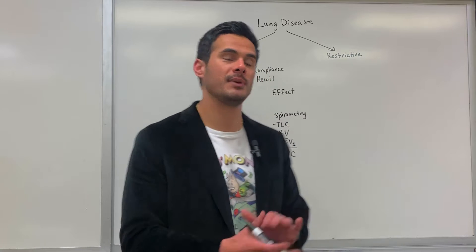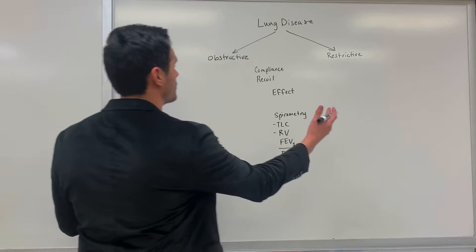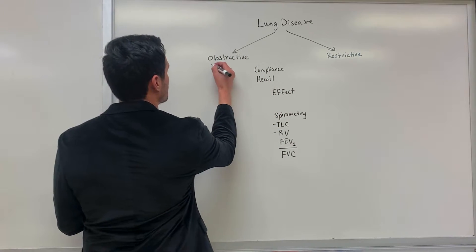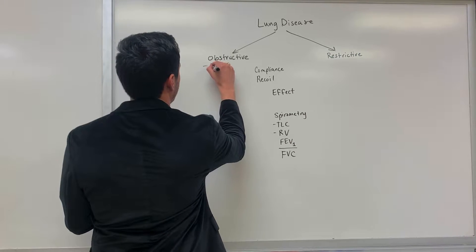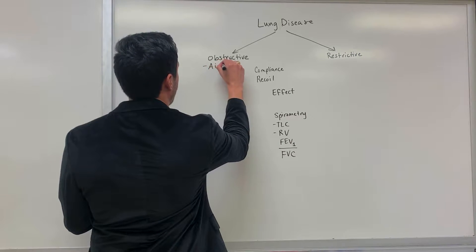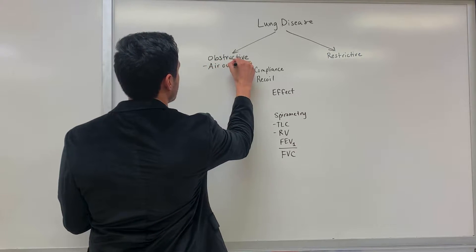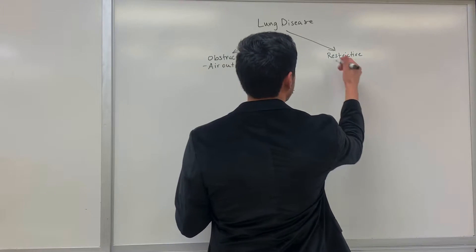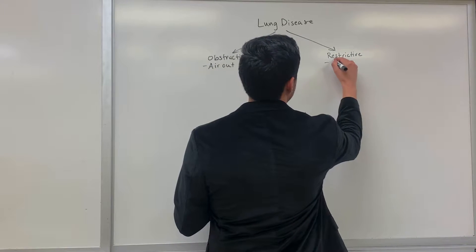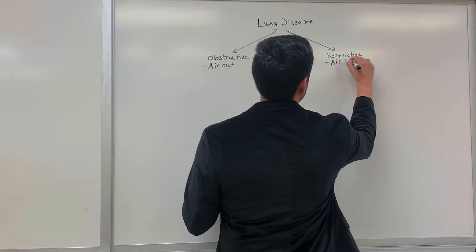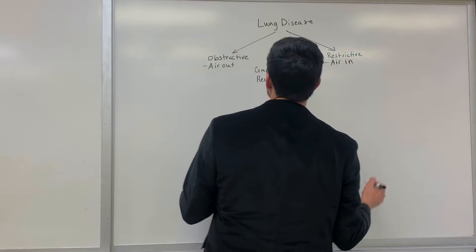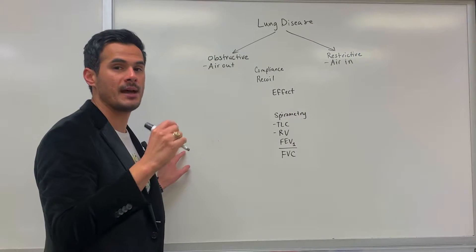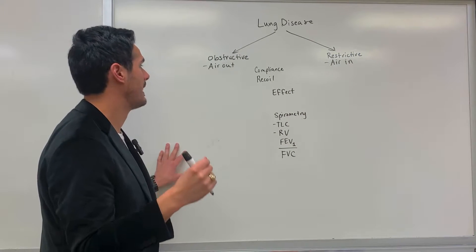The big difference between obstructive and restrictive lung disease is with obstructive, there's difficulty getting air out — so air out of the lungs. For restrictive, there's difficulty getting air into the lungs. And two of the main examples that we looked at in lab: